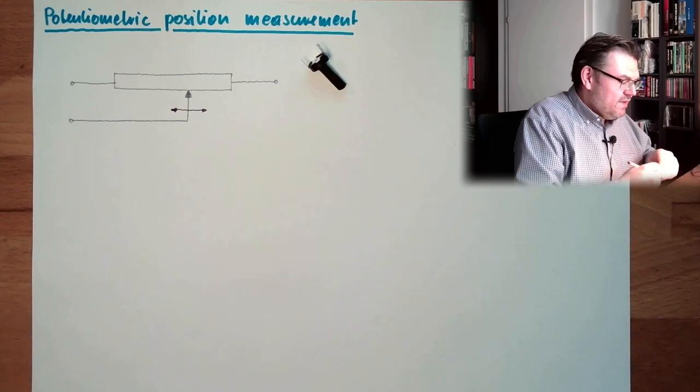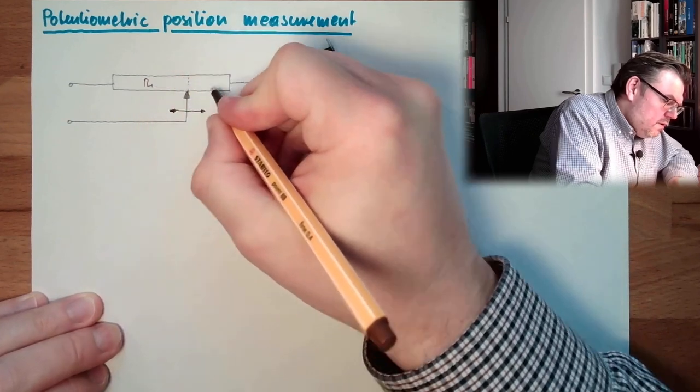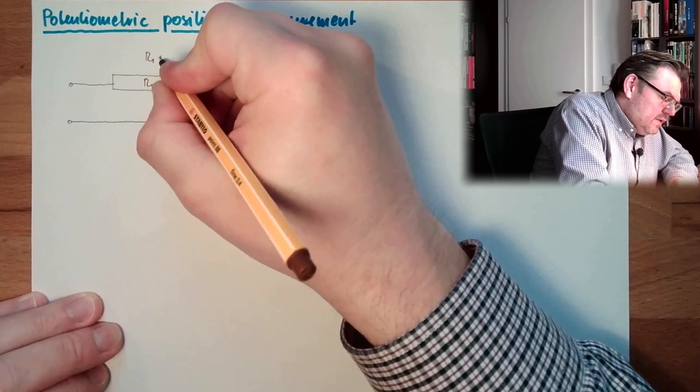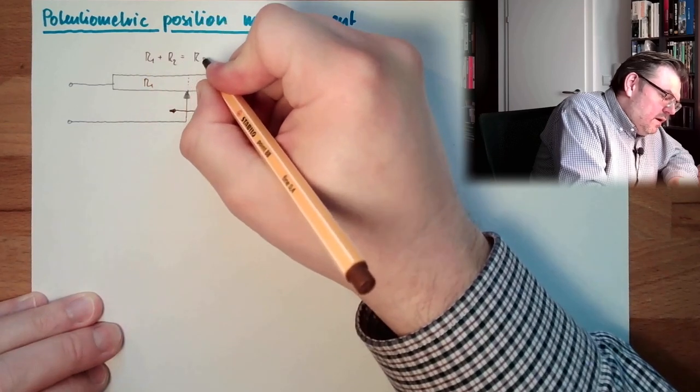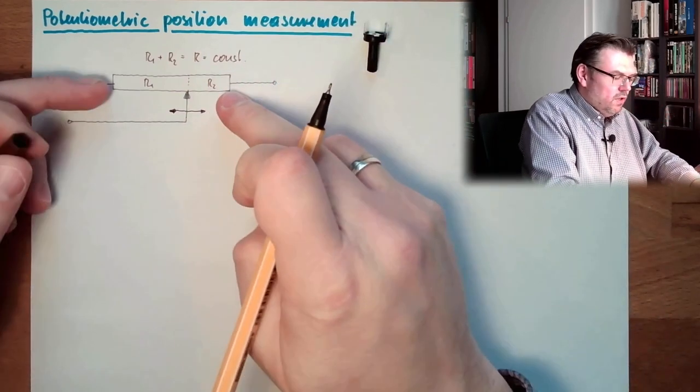And now actually it's clear what we have seen. So we are dividing this resistance here in two parts. So we have here an R1, we have here an R2, and R1 plus R2 is R, and this is constant. The total R is constant.